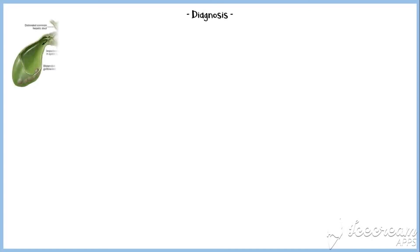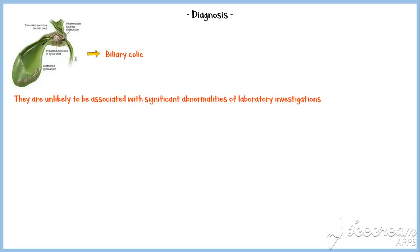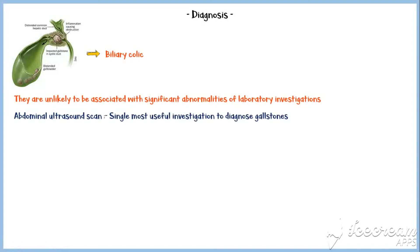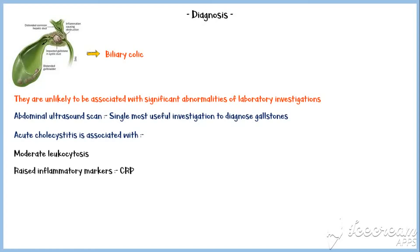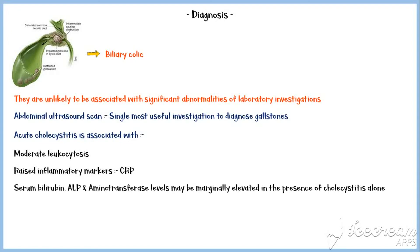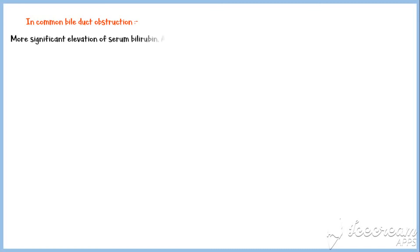Now let's discuss the diagnosis of gallstone disease. Symptomatic gallstones clinically manifest as biliary colic, but are unlikely to be associated with significant abnormalities on laboratory investigations. Abdominal ultrasound scan is the single most useful investigation to diagnose gallstone disease. Acute cholecystitis is usually associated with moderate leukocytosis and raised inflammatory markers such as C-reactive protein. Serum bilirubin, ALP, and aminotransferase levels may be marginally elevated in the presence of cholecystitis alone. In common bile duct obstruction, there will be more significant elevation of serum bilirubin, ALP, and gamma-glutamyl transferase levels, along with elevated serum aminotransferase levels.